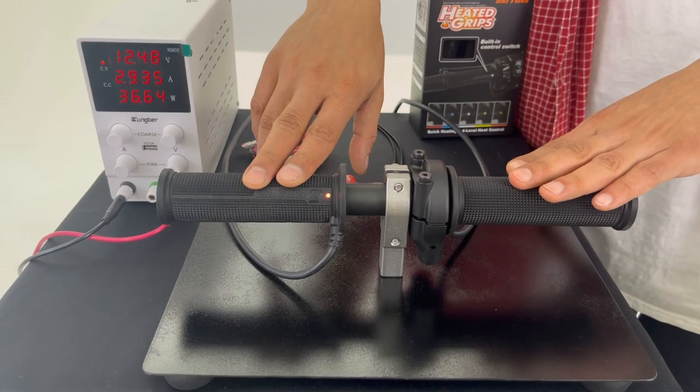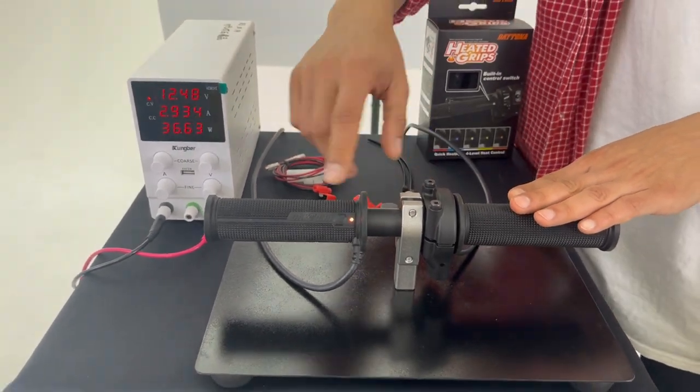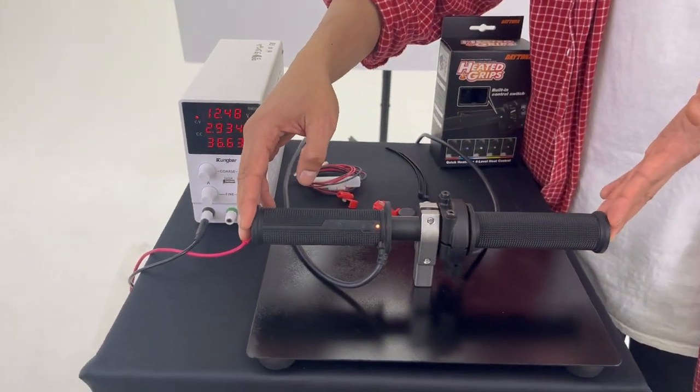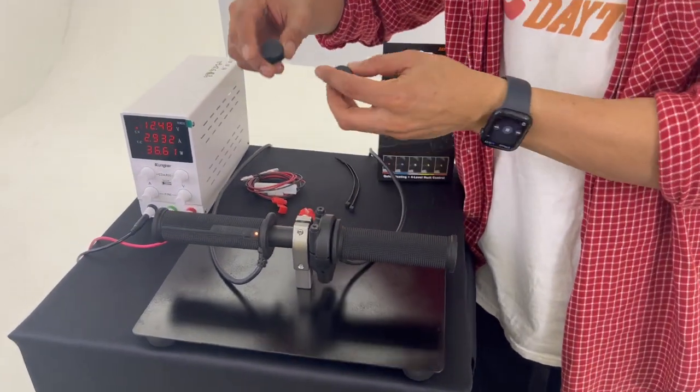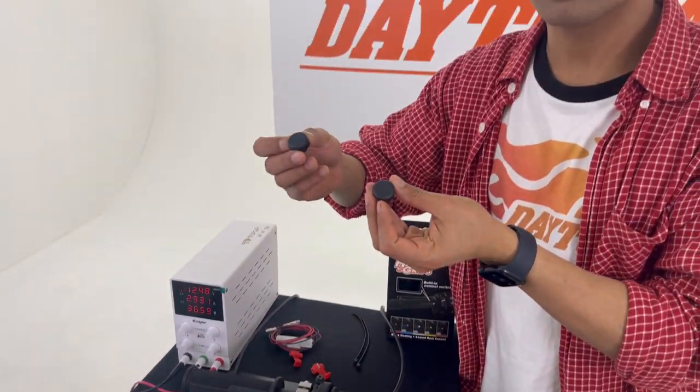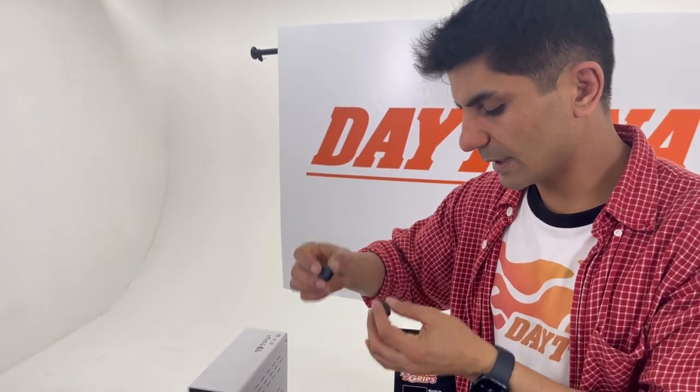And these grips are for 22.2mm handlebars and these are open end grips. In the box you can find handlebar caps if you want to use them. These are included in the box.